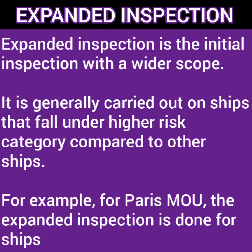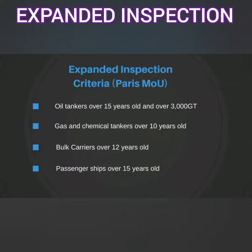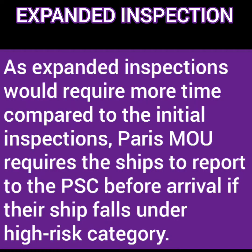An expanded inspection is the same as initial inspection but has a wider scope — for examination purposes, all points checked during the more detailed inspection can be covered. It is generally carried out on ships that fall under a higher risk category. For example, for Paris MOU, the expanded inspection is done for ships over 15 years old and over 3,000 gross tonnage, gas and chemical tankers over 10 years old, bulk carriers over 12 years old, and passenger ships over 15 years old. Thus an expanded inspection requires more time, and Paris MOU also requires the ship to report to the PSC before arrival if it falls under the high risk category.